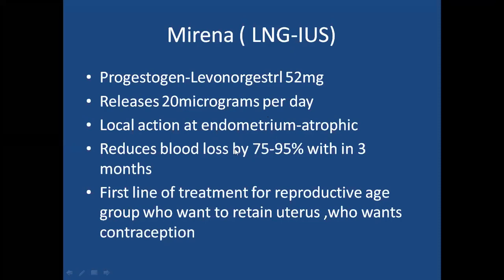Mirena reduces blood loss by 75 to 95 percent within three months. However, as soon as Mirena is inserted the patient will not have immediate relief; it takes a minimum three to four months for the local action to occur, so for the first three months other drugs must be given to control bleeding. Mirena is the first line of treatment for reproductive age group women who want to retain the uterus and also want contraception.